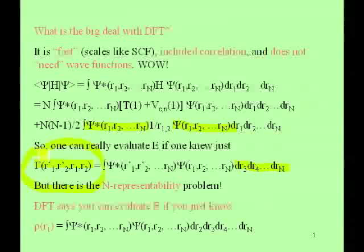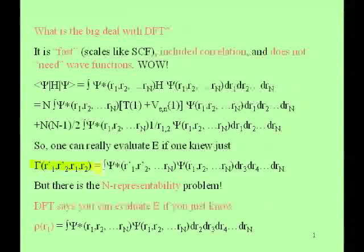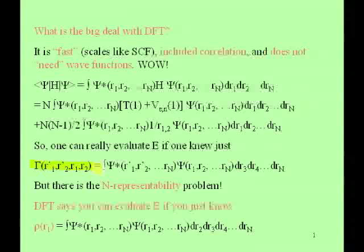A long time ago, people actually tried to parametrize density matrices directly — instead of parametrizing wave functions as linear combinations of Slater determinants, they said let's just make up density matrices with permutational symmetry. They tried that, put variational parameters into the energy expression, varied the parameters to get the lowest energy, and they got energies below the true energy.